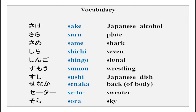Some more words: sake, sara, same, shichi, shingo, sumo, sushi, senaka, seita — which is a sweater with a long sound — and sora. The reason I have given this vocabulary is for you to make sentences and to speak loudly, so that you can hear yourself and understand where you are fumbling or going wrong.